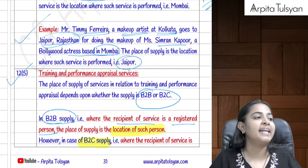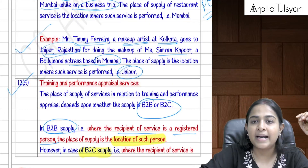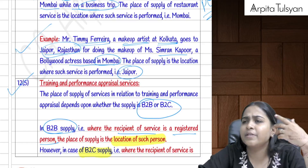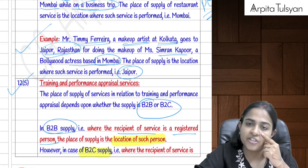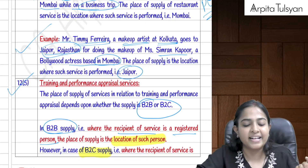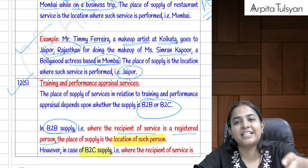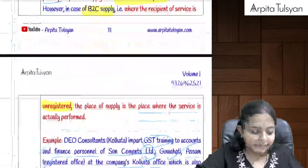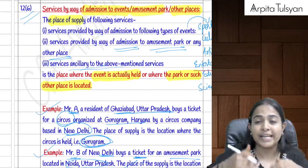Section 12(5) covers training and performance appraisal services. If provided to a registered person, the place of supply is the location of the recipient. If provided to an unregistered person, the place of supply is where the training is actually imparted.